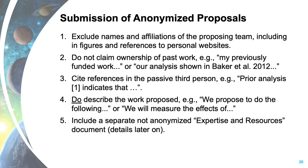The five main points to remember when submitting anonymized proposals are: first, exclude the names and affiliations of the proposing team, including in figures and references to personal websites. Second, do not claim ownership of past work — avoid phrases like 'my previously funded work' or 'our analysis shown.' Instead, write in the passive third person. Third, use square brackets for citations. Fourth, do describe the work proposed — you must say 'we propose to do the following' or 'we will measure the effects of.' And fifth, include a separate, not-anonymized expertise and resources document.